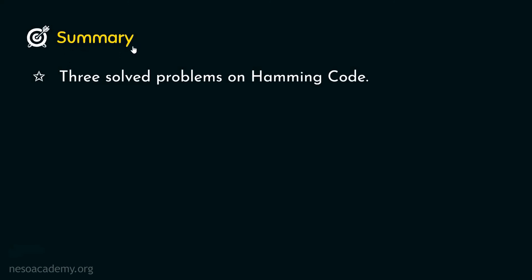So in this session, we observed three different solved problems on Hamming codes. That will be all for this session. In the next session, we will observe the floating point conversion. Thank you all for watching.